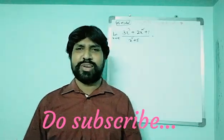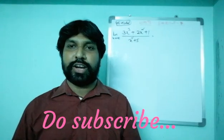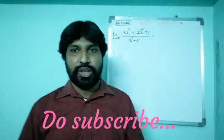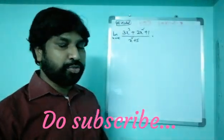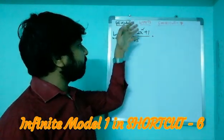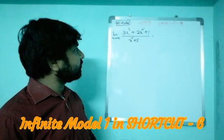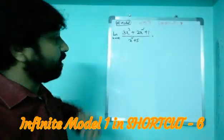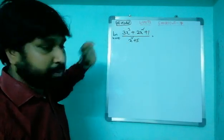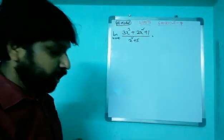Hi friends, welcome to my channel. Yesterday we discussed the infinite model shortcut number one. Today I'm going to reveal the remaining two shortcuts — there are three shortcuts total, so shortcut number two and three I'm going to reveal today. Yesterday we discussed the case where numerator highest power and denominator highest power are equal. Now today I'm going to discuss the remaining two cases.